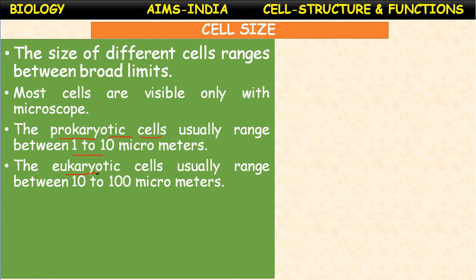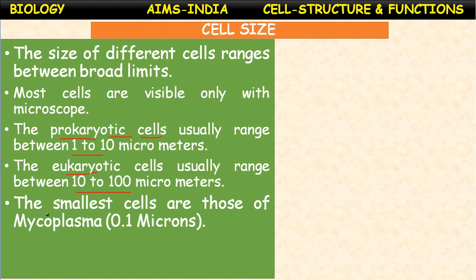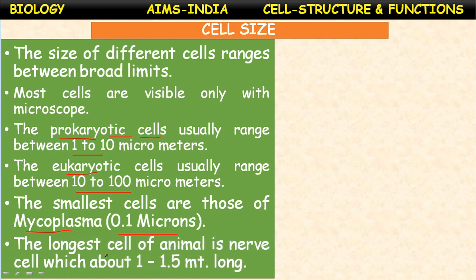The smallest cells are those of mycoplasma — 0.1 microns. They are also called PPLO: pneumonia-like organisms. The longest cell of an animal is the nerve cell, which ranges about 1 to 1.5 meters long. Here, the relative sizes of cells are shown on a scale. Cell size is measured using an electron microscope and light microscope. Measurement units: 1 angstrom = 10⁻¹⁰ meters; 1 centimeter = 10⁻² meters; 1 millimeter = 10⁻³ meters; 1 micrometer = 10⁻⁶ meters; 1 nanometer = 10⁻⁹ meters.